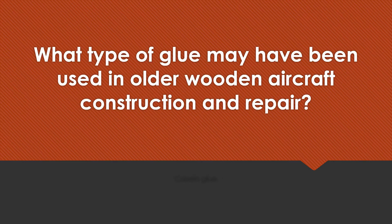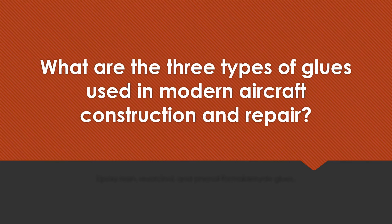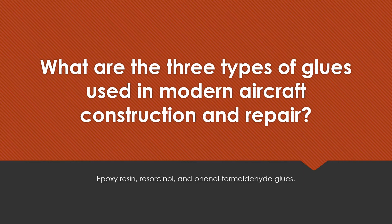What type of glue may have been used in older wooden aircraft construction and repair? Casein glue. What are the three types of glues used in modern aircraft construction and repair? Epoxy resin, resorcinol, and phenyl formaldehyde glues.